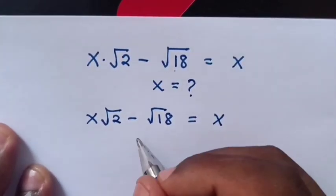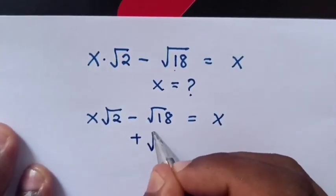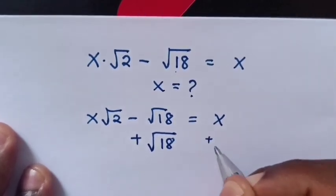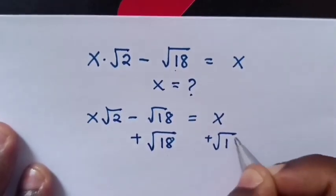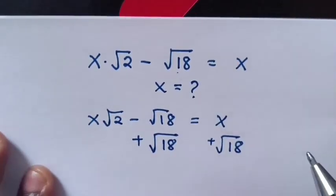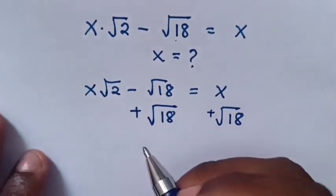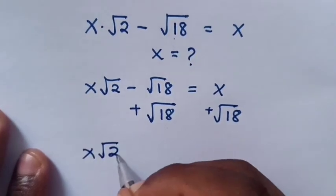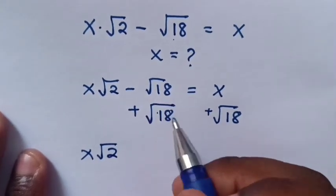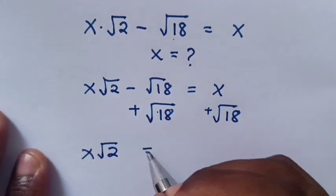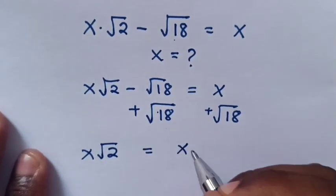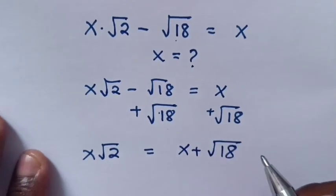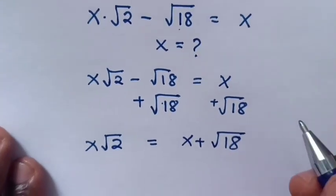We add square root of 18 to both sides so as to move square root of 18 to the right side. So, x square root of 2 is equal to x plus square root of 18.